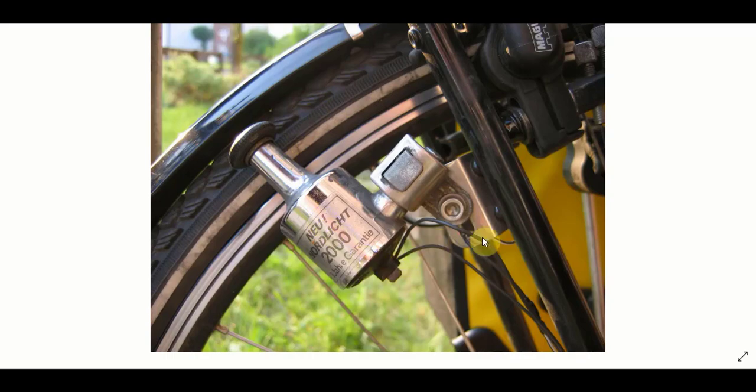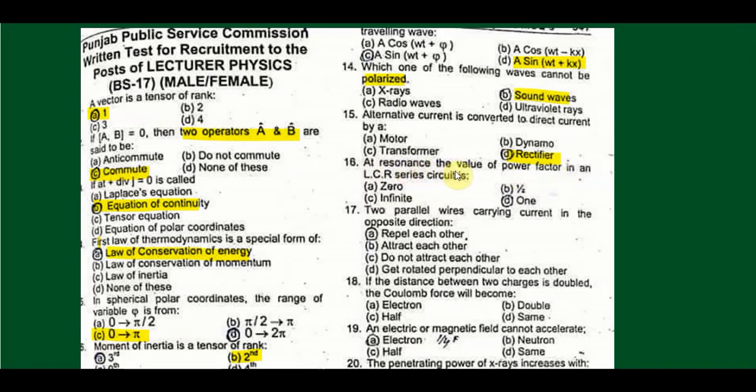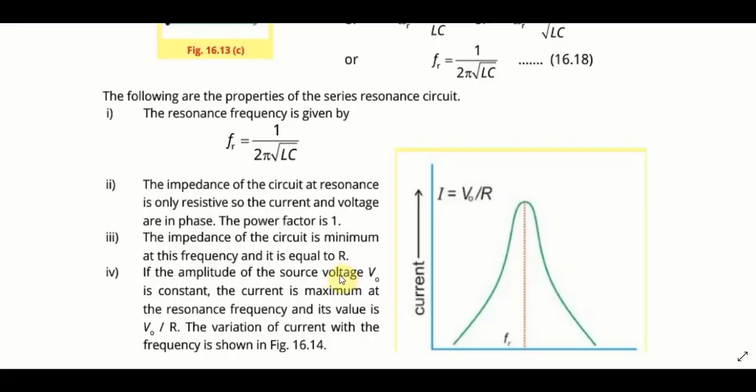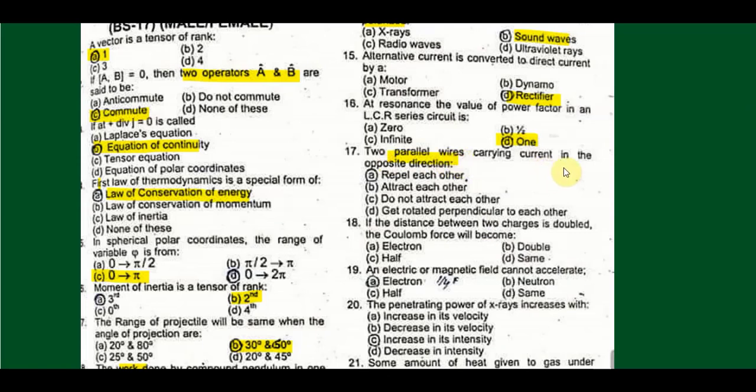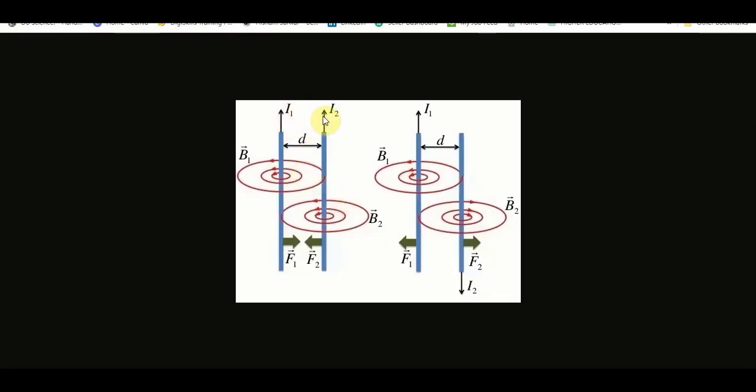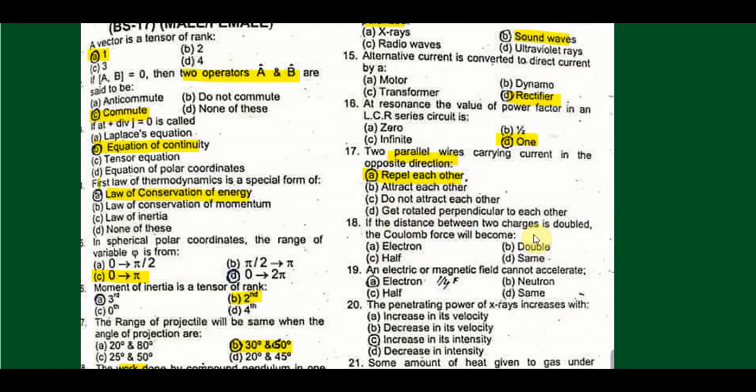At resonance, the value of power factor in an LCR series circuit is: at resonance in an LCR series circuit, the power factor is equal to 1. Parallel wires carrying current in opposite directions repel each other. If current is in the same direction, then according to right hand rule, there will be a force of attraction between these two wires. While when current is in opposite directions, again applying the right hand rule, here there will be a force of repulsion.